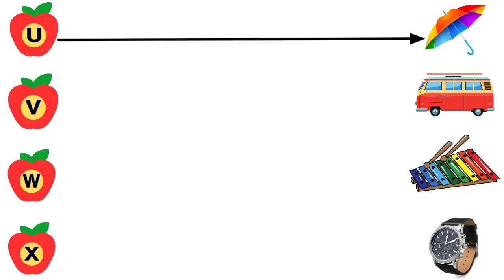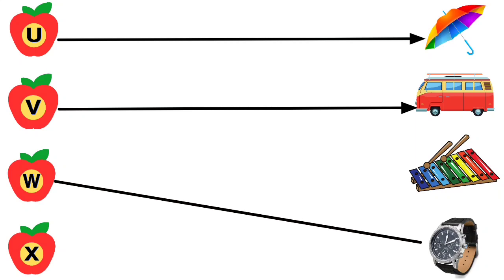U for Umbrella, V for Van, W for Watch, X for Xylophone.